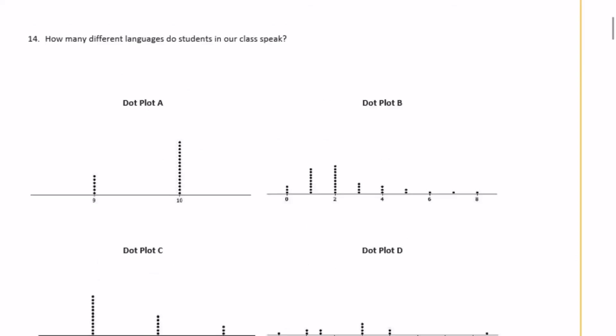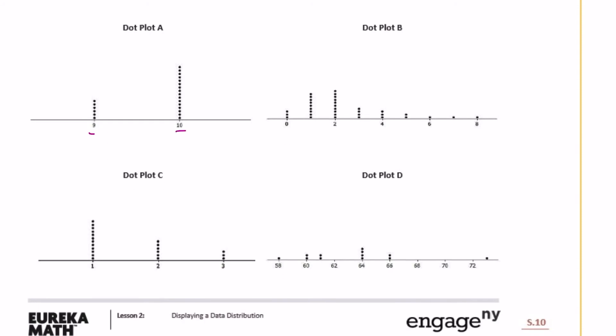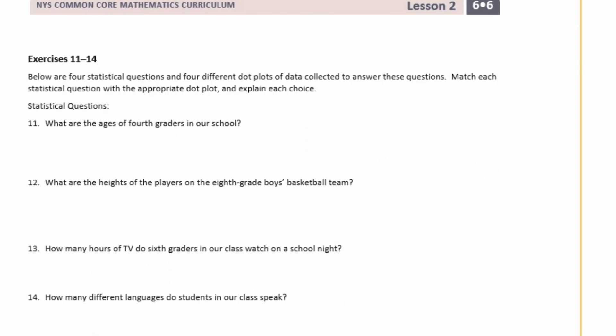So what ages are fourth graders in our school? So looking at the dot plots, we have choices of 9 and 10, between 0 and 8, 1, 2, or 3, or between 58 and 72. So which dot plot makes sense for the ages of fourth graders? Well, sixth graders, you guys are usually like 11 and 12 years old. So fourth grade is two years less than that. So that would be like 9 and 10 years old. So the only dot plot that makes sense here would be dot plot A because we have some nine-year-olds and we have some 10-year-olds. So let's say dot plot A because fourth graders are usually nine or 10 years old.